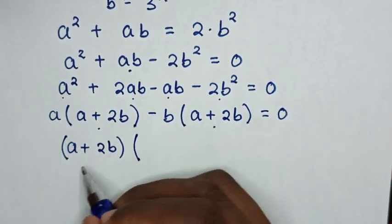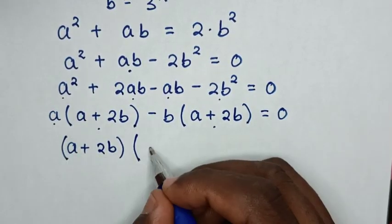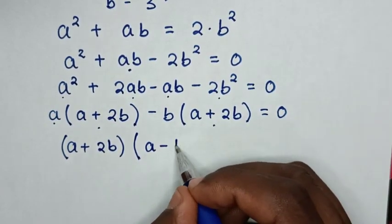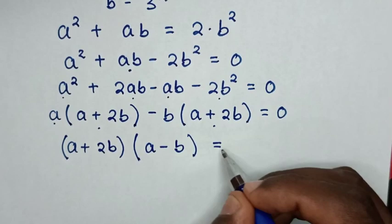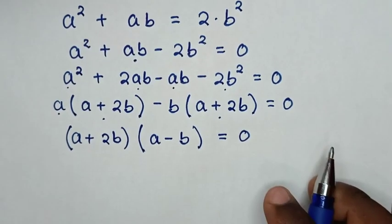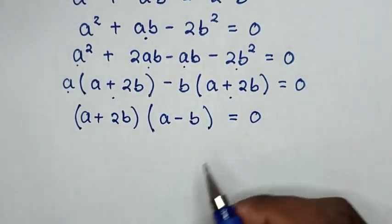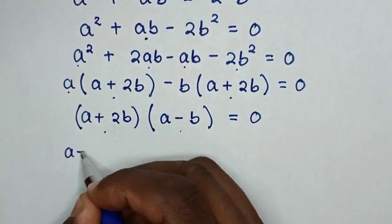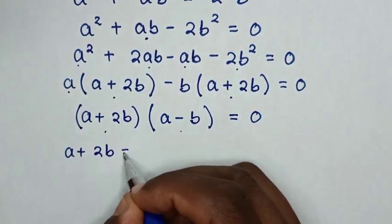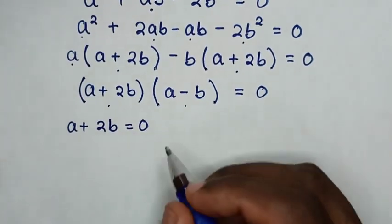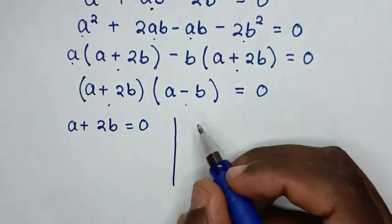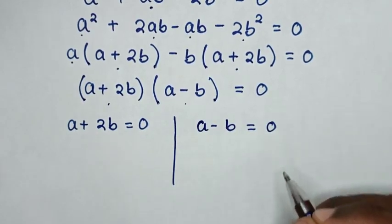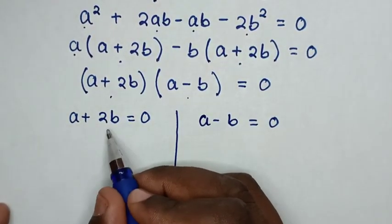This gives (a plus 2b)(a minus b) equals 0. From this equation we have two solutions: from the first factor, a plus 2b equals 0; from the second factor, a minus b equals 0.